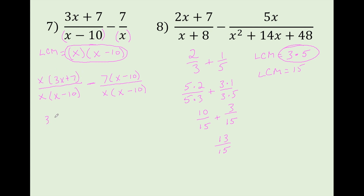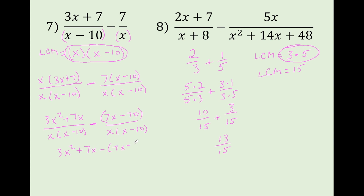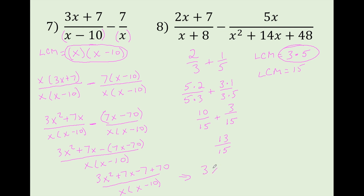Now we're going to multiply this top, minus multiply this top. This is subtraction — subtraction gets a little tricky. We're going to put these two together: 3x squared plus 7x minus 7x minus 70, over a single LCM. Then multiply and simplify the top — combine like terms on the top, multiply everything out. The bottom you just leave as is; you don't have to multiply that out. So we get 3x squared plus 70 over x times (x minus 10). Be careful with the minus sign.